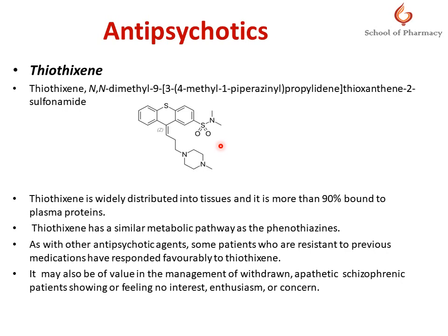As an antipsychotic agent, thiothixene is very favorably used in those patients who are resistant to previous medications such as chlorpromazine or fluphenazine. Thiothixene may also be valuable in the management of withdrawn, apathetic schizophrenic patients — those showing no interest, enthusiasm, or concern. This drug is also used for those shallow, clinically unresponsive patients.